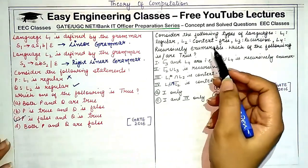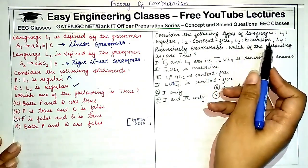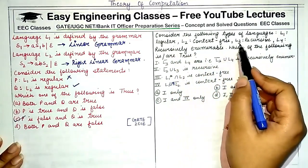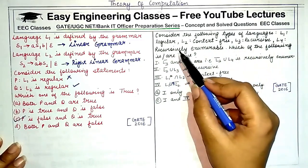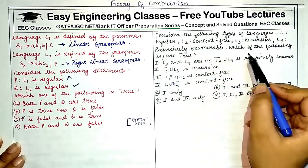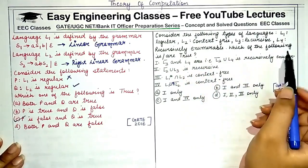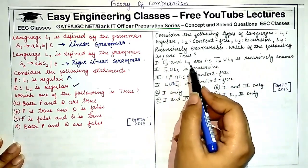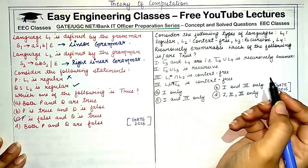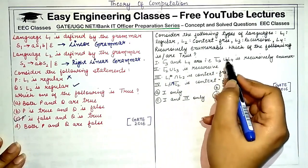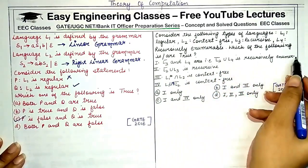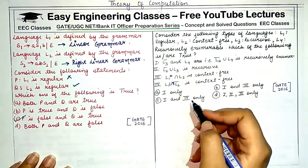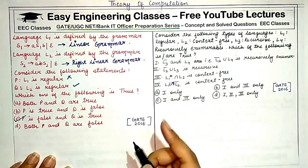Coming to the second question: consider the following types of languages — L1 which is a regular language, L2 a context-free language, L3 a recursive language, and L4 a recursively enumerable language. We have to determine which of the given statements are true. Before starting with the proof of these statements, we must remember the hierarchy of languages.